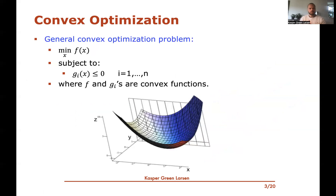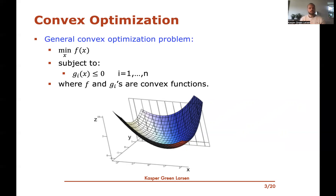In general, a convex optimization problem looks like this: you want to find the minimum over some x — which can be a whole vector of variables — of some function f(x), subject to constraints. You have up to n constraints, and each tells us that some function g_i(x) has to be at most zero. If f and the g_i's are convex functions, this is a general convex optimization problem, and the previous SVM problem fits into this framework.